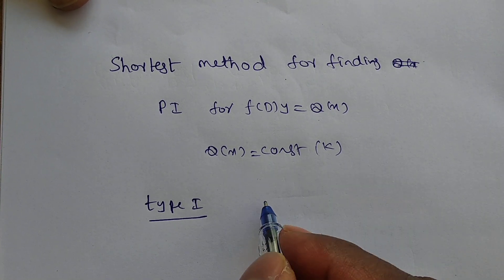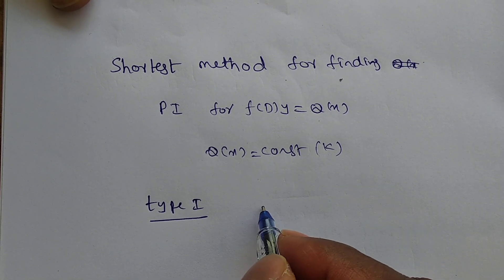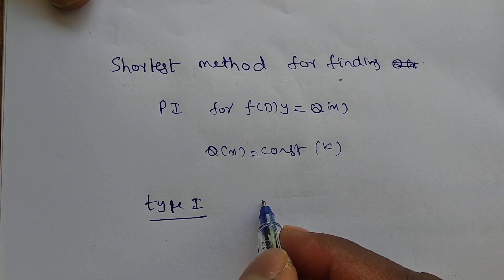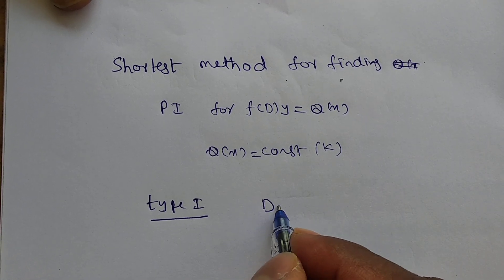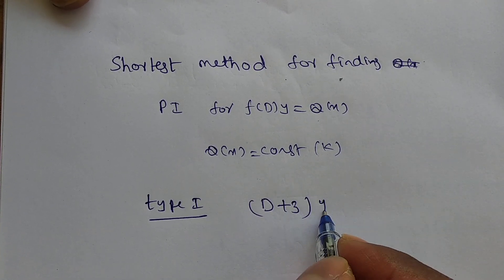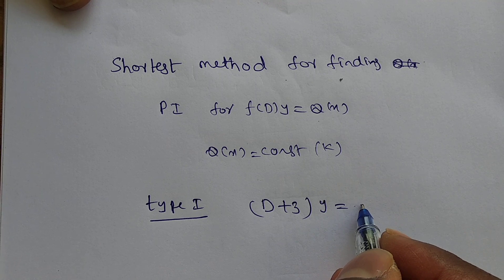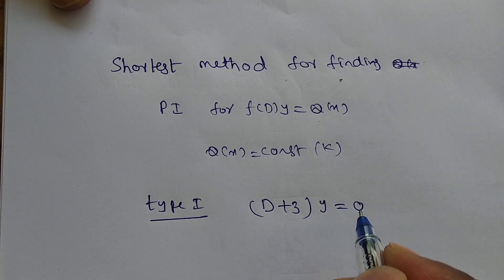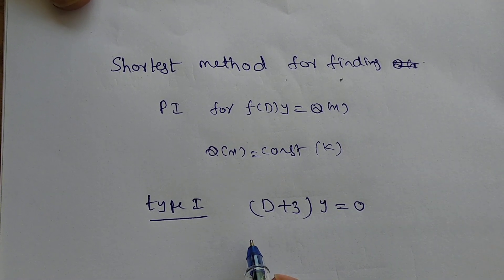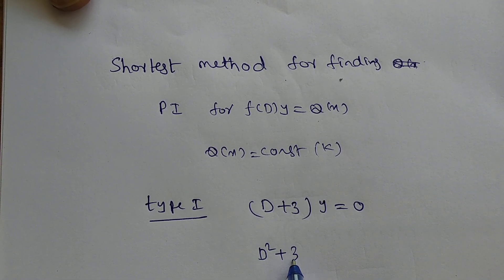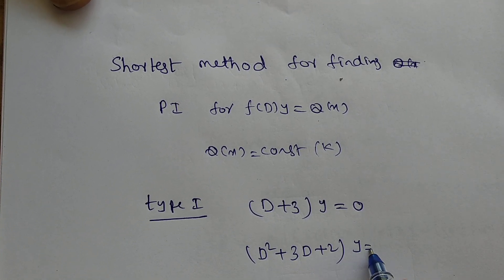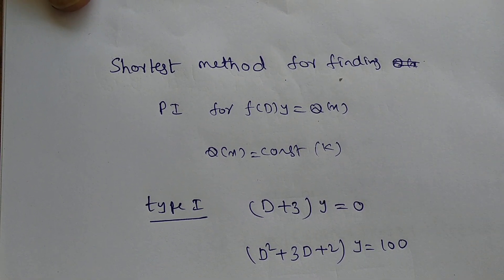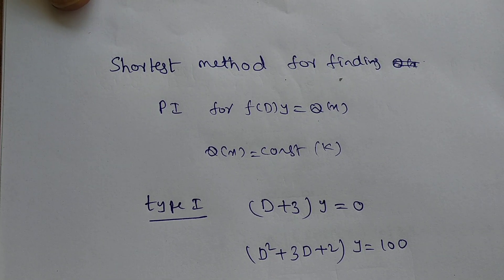Form 1 means problems like f(D)·y = some constant. For example, (D+3)·y = constant, where the constant may be 0, or (D²+3D+2)·y = 100. These are the types of problems we are going to solve.